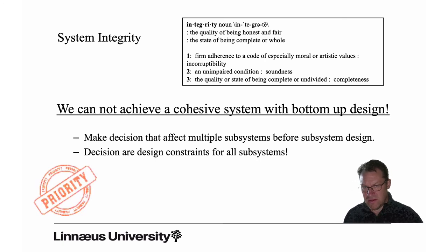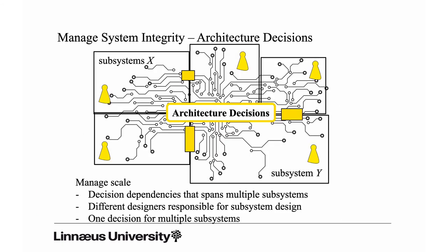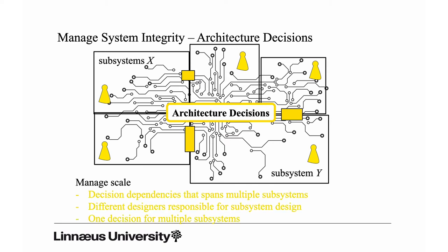Because these decisions are design constraints that affect all — or most — subsystems. In order to manage system integrity we make architecture decisions. We saw that we can do decomposition with interfaces to manage different designers. If we make the architecture decisions — the decisions that affect the entire system — before we decompose, we can manage scale differently: we can manage these three problems at one level, the architecture level, with our architecture decisions.